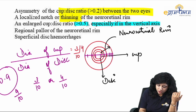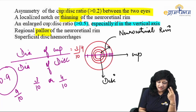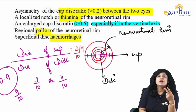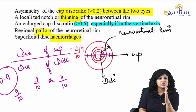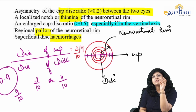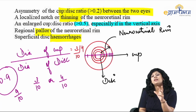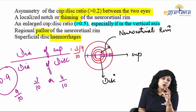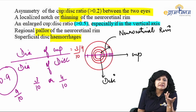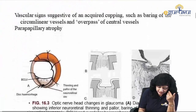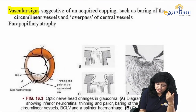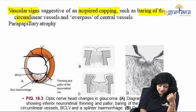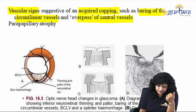There will be pallor and thinning of the neuroretinal rim, then hemorrhages called splinter hemorrhages. Whenever intraocular pressure is very high, there is risk of hemorrhages over the surface of the optic disc — these are called splinter hemorrhages. There can also be vascular signs suggestive of acquired cupping, such as bending of curvilinear vessels and overpass of central vessels. We can also have parapapillary atrophy — atrophy all around the optic disc.